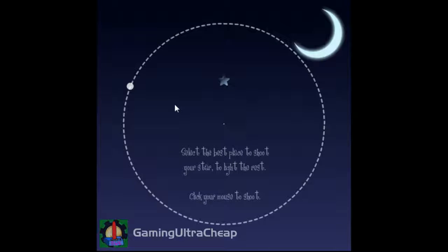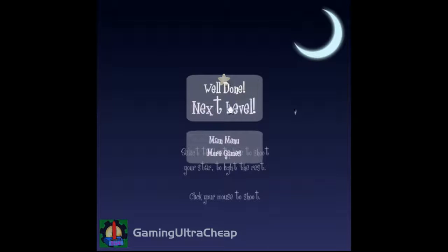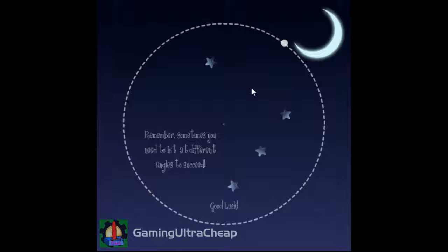Select the best place to shoot your star to light the rest. Click your mouse to shoot. So it looks like this circle here along the line is our cursor, and this is the star we want to light. Beautiful! Remember, sometimes you need to hit at different angles to succeed. Good luck!